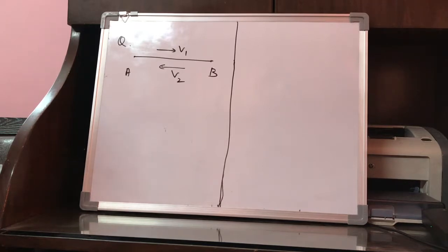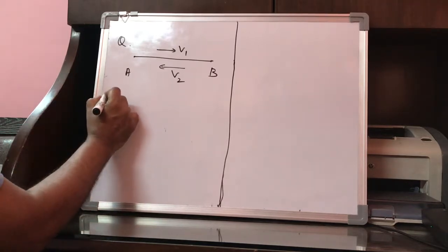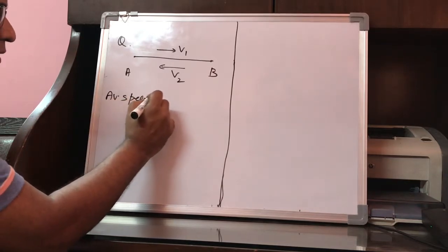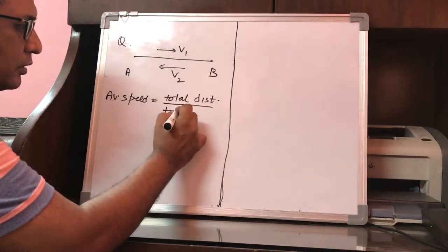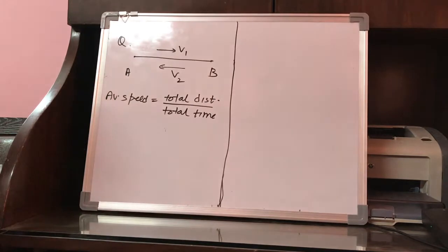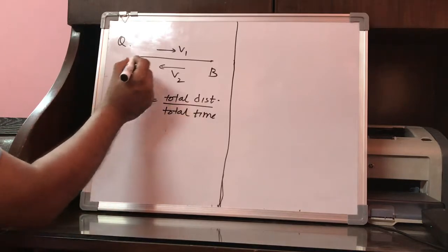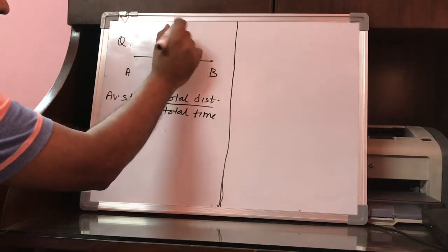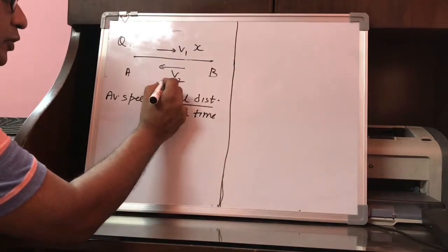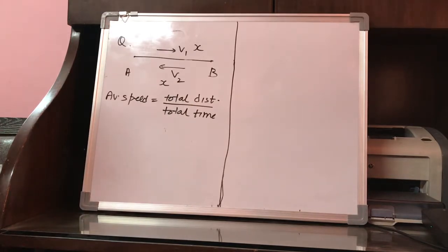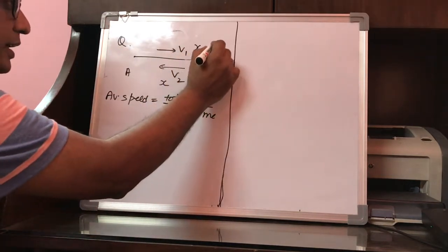We know that average speed is defined as the total distance travelled divided by total time taken. We are not given any distance or time in this case, so we will have to assume. Let us assume that the distance between A and B is x, so the distance between B and A will also be equal to x.